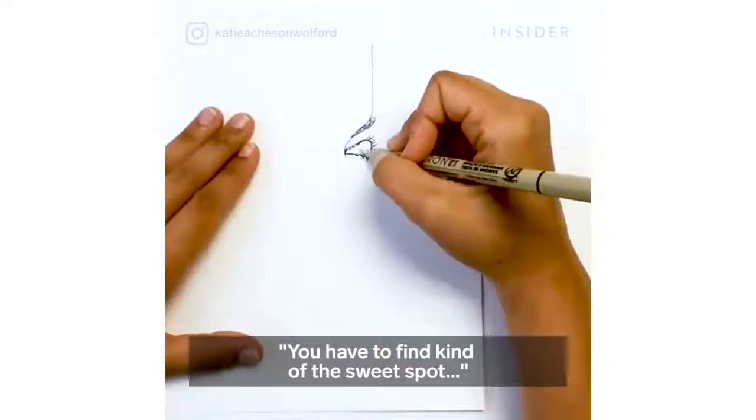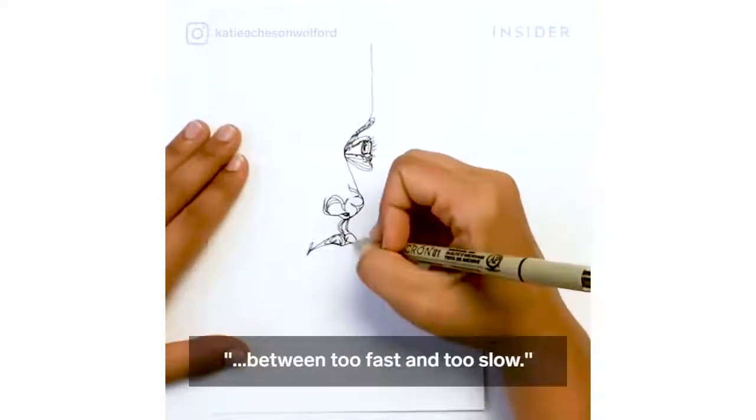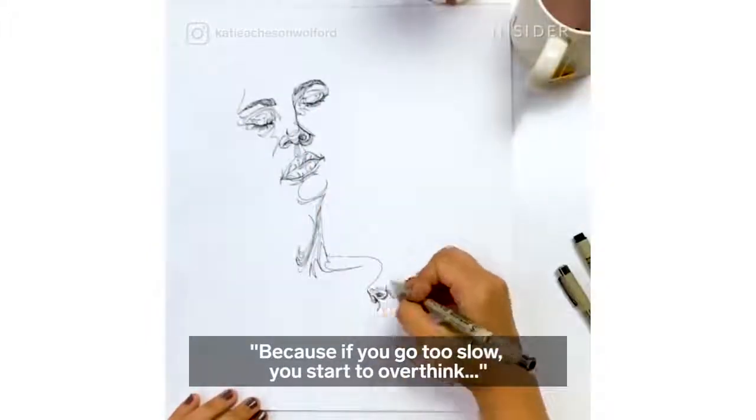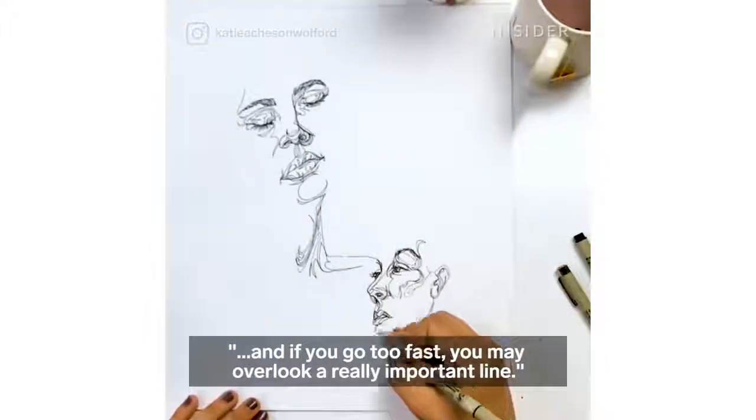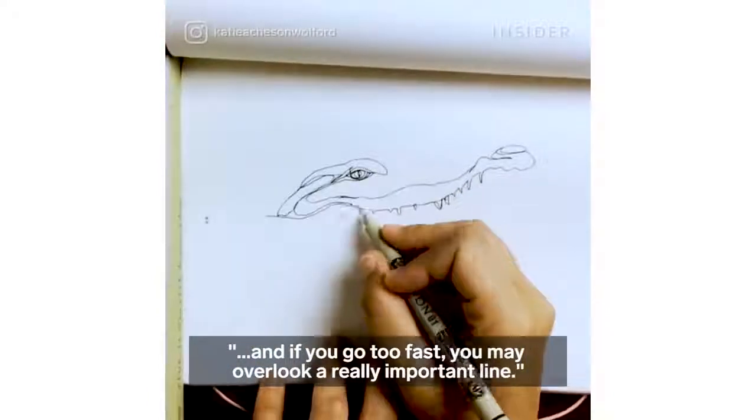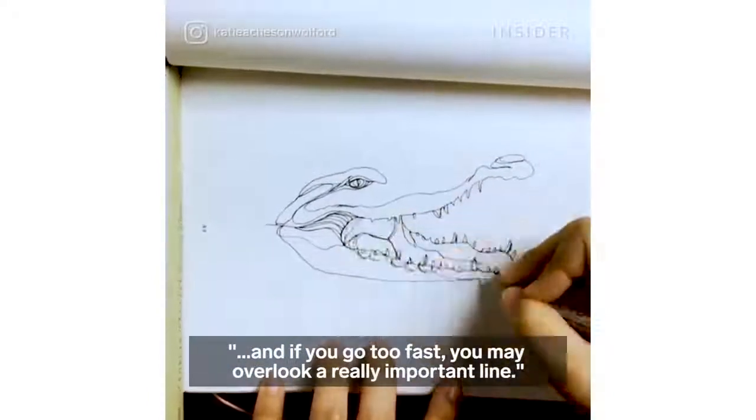You have to find kind of the sweet spot between too fast and too slow, because if you go too slow you start to overthink, and if you go too fast you may overlook a really important line.